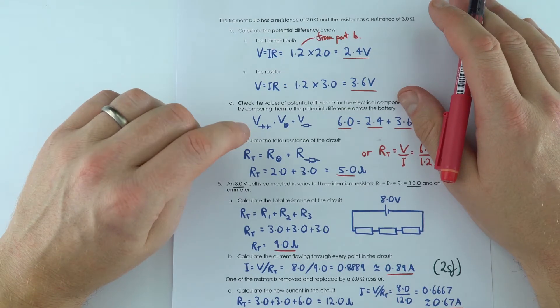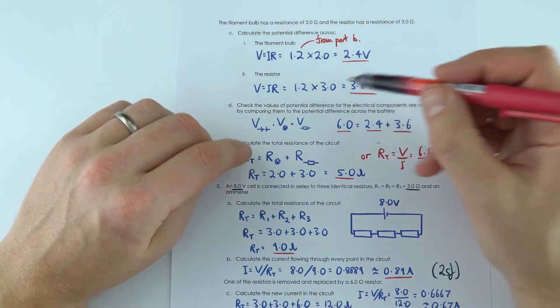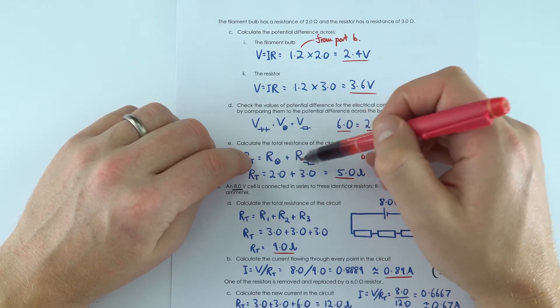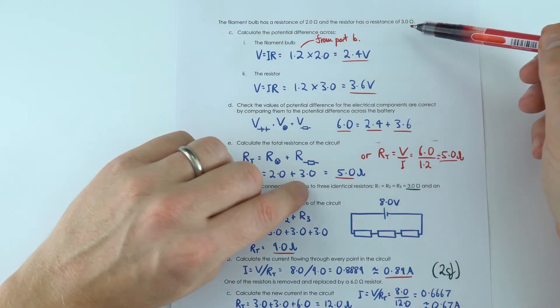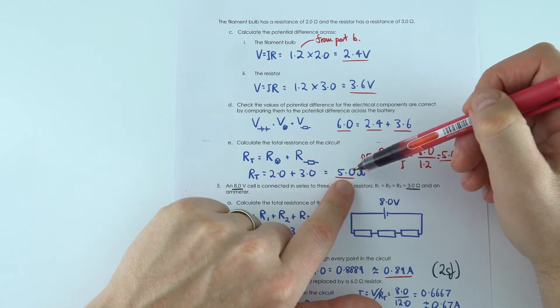The other thing is that the total resistance of the circuit is equal to the resistance of individual components added together. So 2 plus 3 gives the total resistance of 5 ohms.